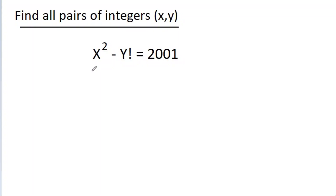In this video, we have given that x squared minus y factorial is equal to 2001, and we have to find one pair of integers x and y.